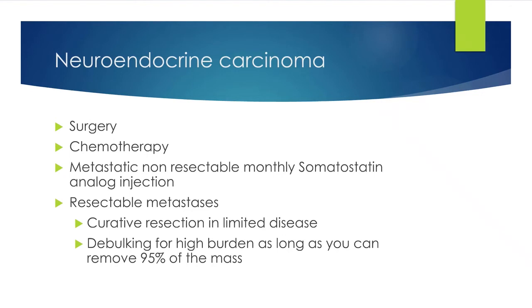For metastatic disease in the liver, we resect the lesions, and unlike other cancers there is a role for debulking surgery. If there is a large liver tumor burden and we can remove 90–95% of the mass, we will do so, knowing we are leaving some disease behind, because it improves survivability and quality of life. Patients then continue on monthly somatostatin injections. A medical oncologist with interest in neuroendocrine tumors is involved. New biologic agents such as everolimus and similar molecular agents are emerging with some efficacy, but none has definitively established itself yet.